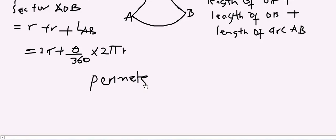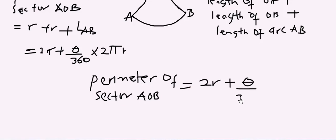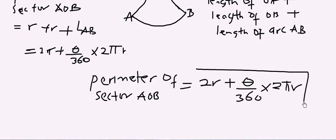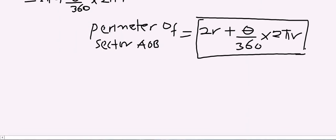The perimeter of sector AOB is equal to 2r plus θ over 360 times 2πr, where r is the radius of the circle. In our subsequent video, we'll see how we can apply this formula for the perimeter of sector AOB.